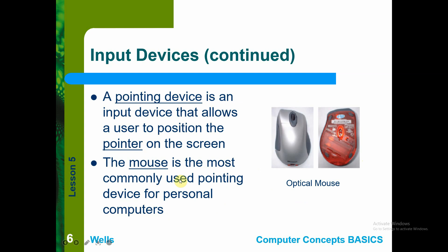For a pointing device — we consider it a pointing device because it is an input device that allows the user to position the pointer on the screen. When you click or navigate to specific parts of the screen, that is your pointer. We use the mouse as your pointing device to position and change the location of the pointer on the screen. It is the most commonly used pointing device for personal computers.